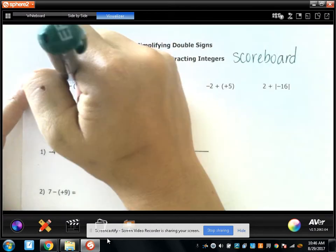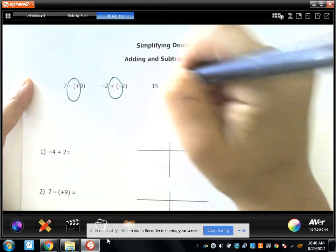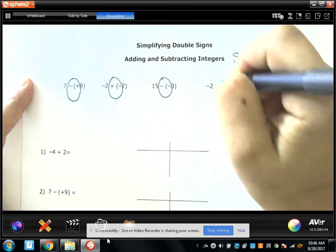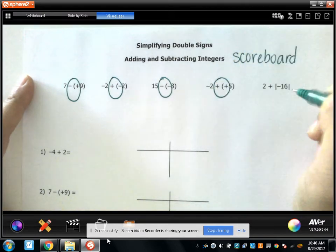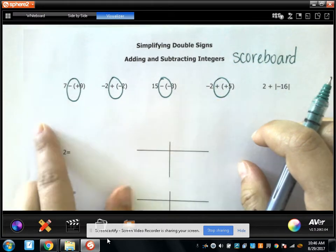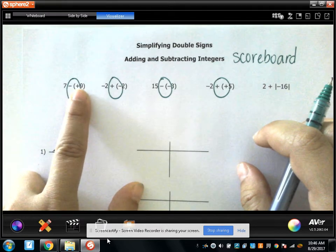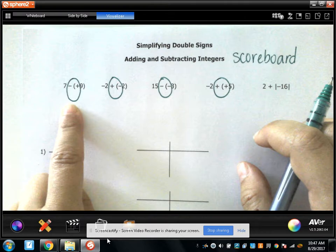Double signs are two signs that are right next to each other in an expression and we're going to take all these double signs and make them into just one sign.